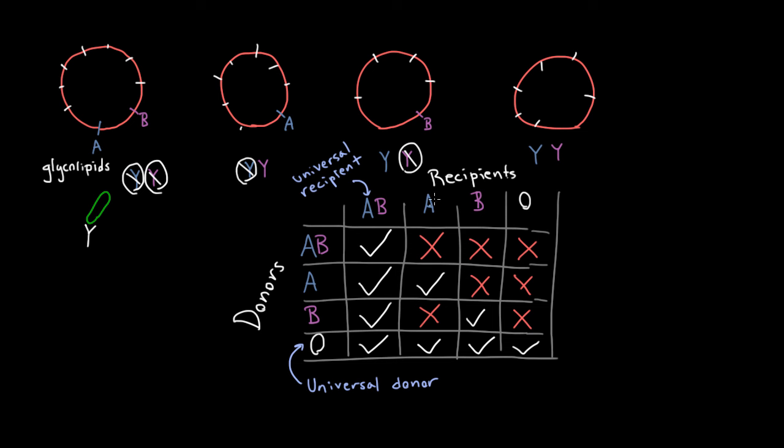And all these things, by the way, AB, ABO, these are blood types. So when someone asks you for your blood type, this is what they're referring to. And this is why it's really important to know your blood type if you're ever going to require a blood transfusion.